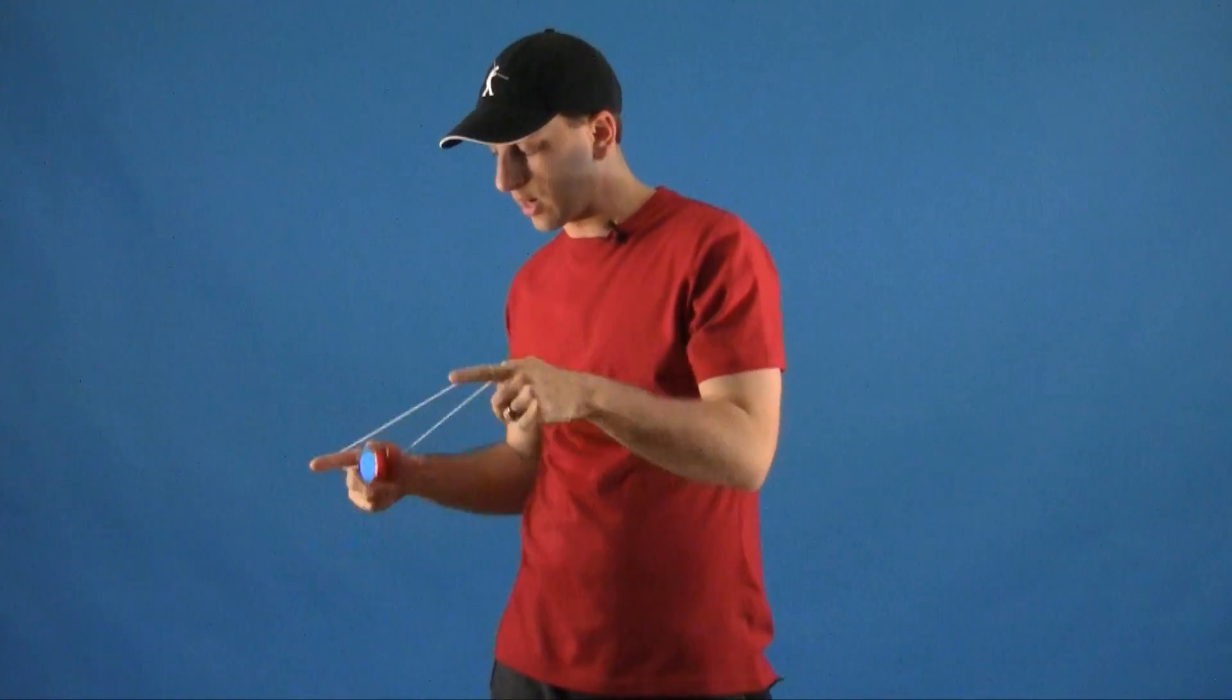To stop the trick, instead of stopping it on the inside, you actually want to wait until you've done one of your Revolutions to the outside. Then you just stick your finger into the big wide open string, and that will get you right back into your one and a half mount.